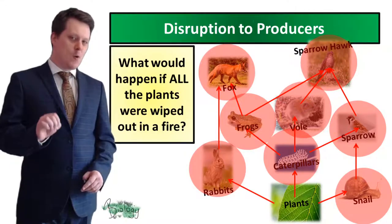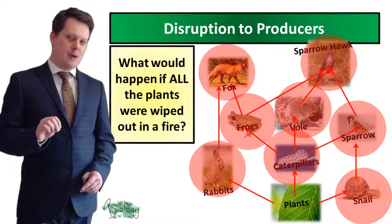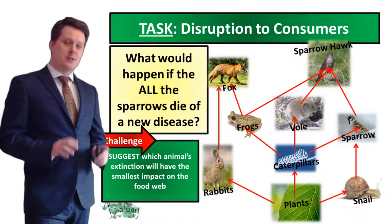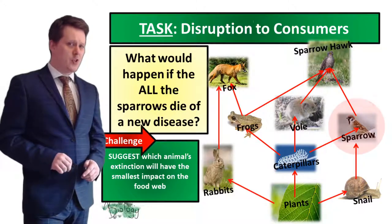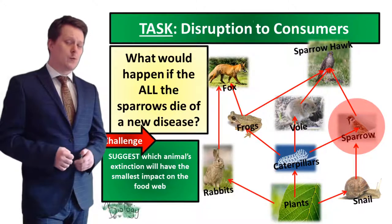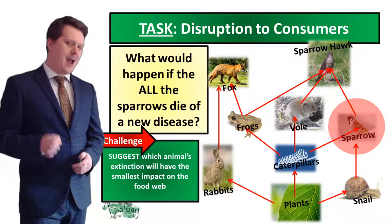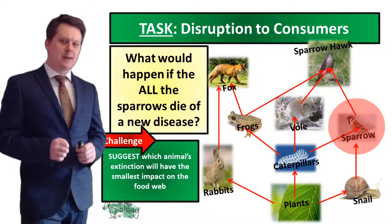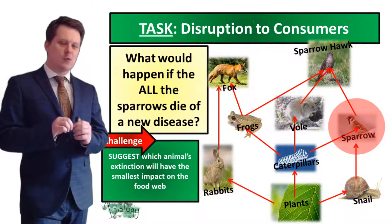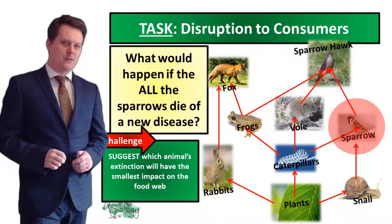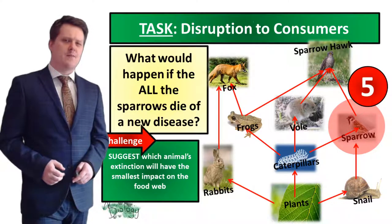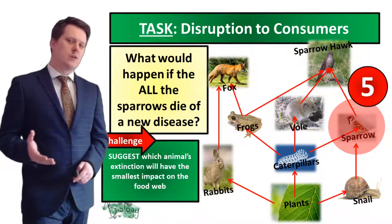So the producer is the most important aspect of any food web. For your task, I'd like you to suggest what would happen to all the other animals in this food chain if our sparrows were to die of a new disease. And if you want a challenge, I'd also like you to suggest which animal's extinction would have the smallest impact on this food web. I'm going to put five seconds on the clock, and if you need more time pause the video.